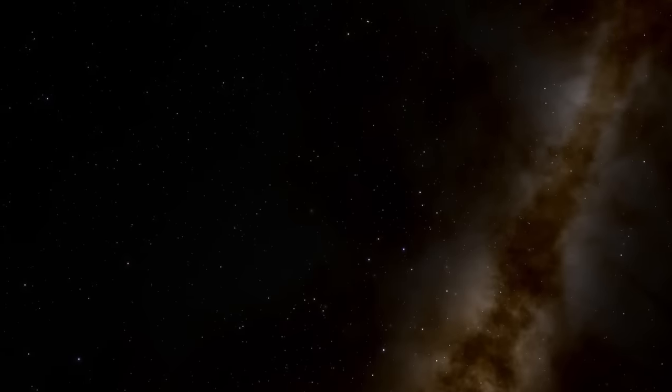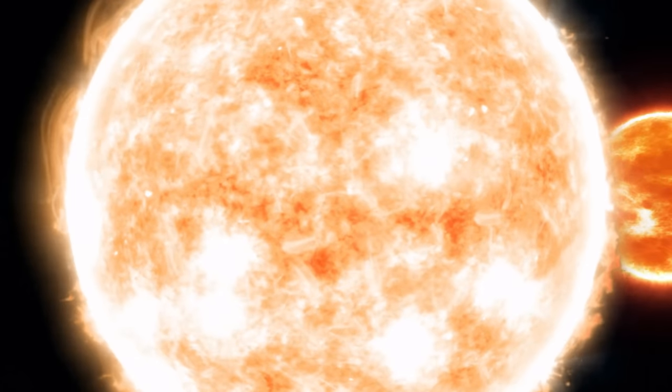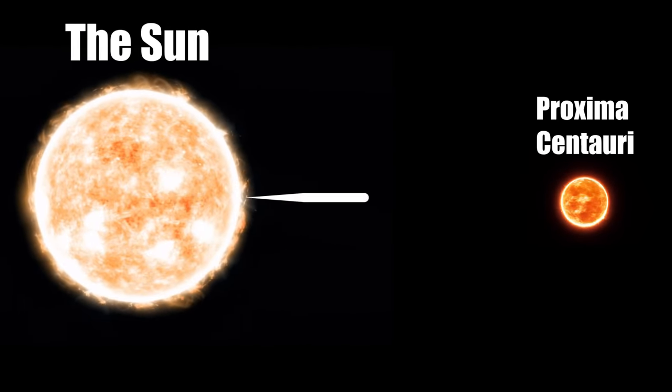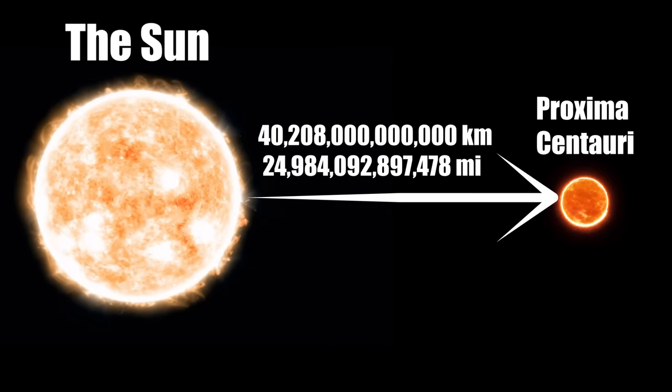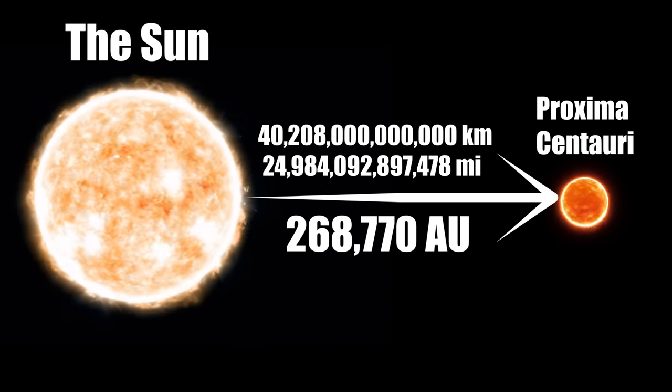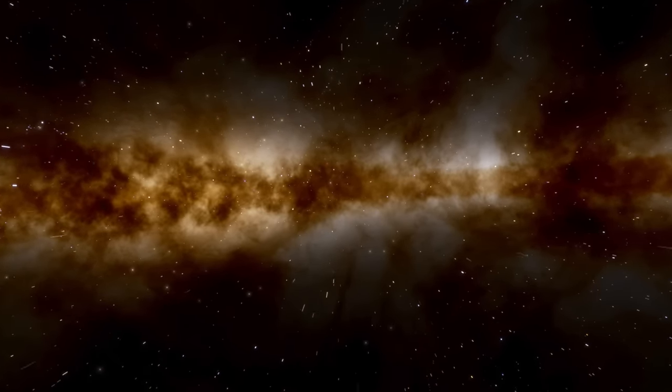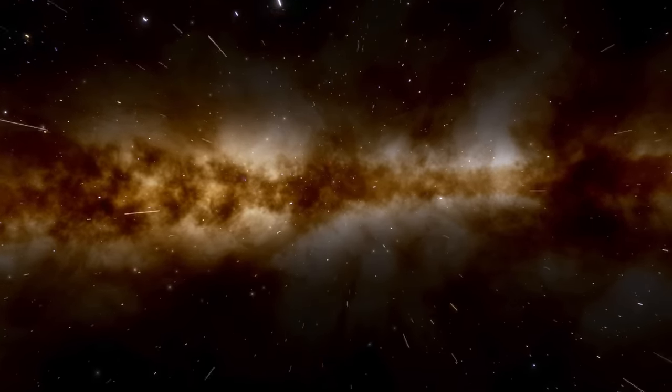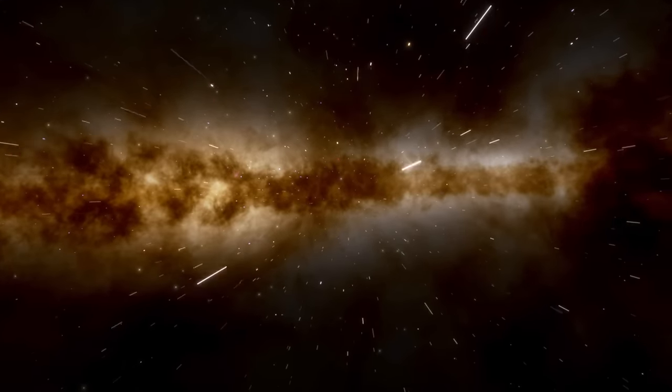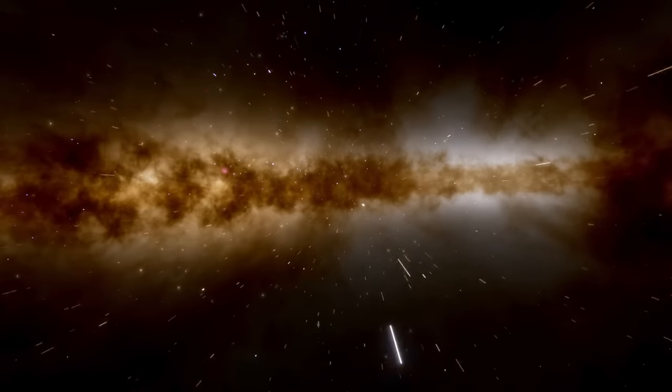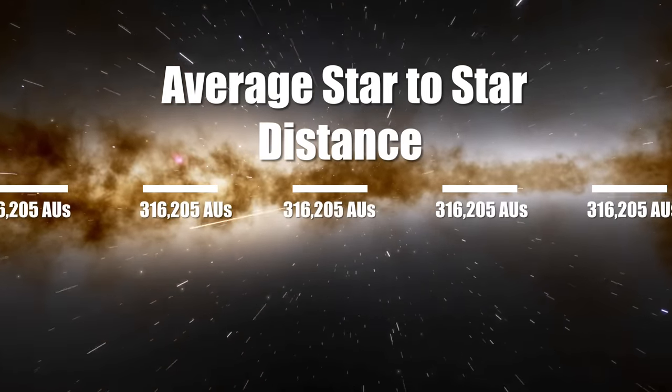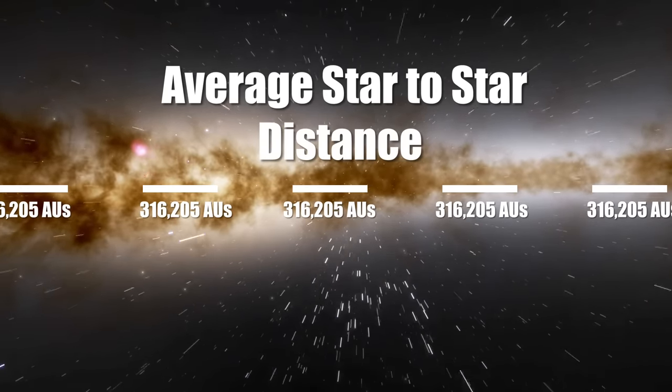Here, distances stretch to truly staggering scales. For instance, Proxima Centauri, the star closest to our Sun, is located approximately over 40 trillion kilometres away. This equates to nearly 270,000 astronomical units. Within this interstellar realm, the scales and distances involved dwarf everything within our solar system, challenging our understanding and imagination of the scale of our galaxy. Within the Milky Way, the average distance between stars is about 316,000 astronomical units, illustrating the vastness of our galaxy.